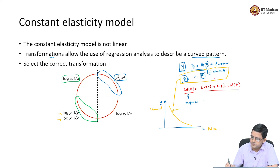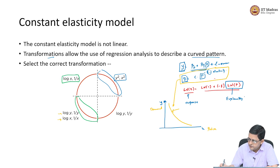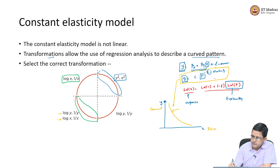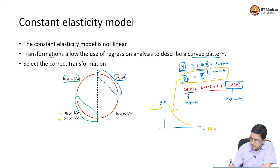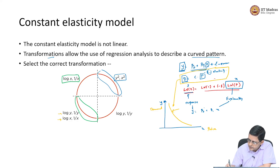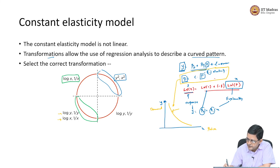My response variable is no longer d but is actually the natural log of d. My explanatory variable is not price but is actually log of price. I have transformed both variables. This can be considered y and this can be considered x, so this is of the form y equals beta naught plus beta 1 x, where x is log of price, y is log of d, beta naught is log of c, and beta 1 is the slope, which is negative of the elasticity.